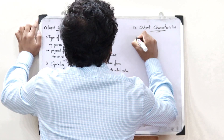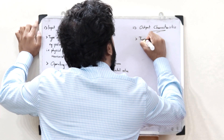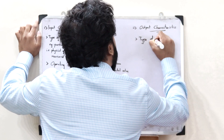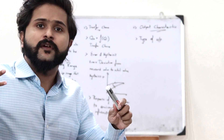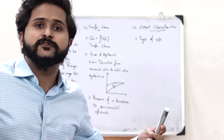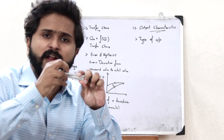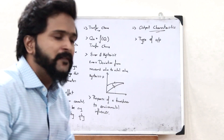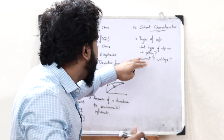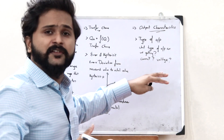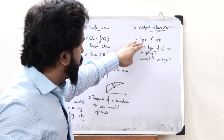The first thing under output characteristics is the type of output we are getting — that is, is the output a particular current value or a particular voltage value? What type of output are we getting from this transducer? Is it current? Is it voltage? That is what comes under type of output.